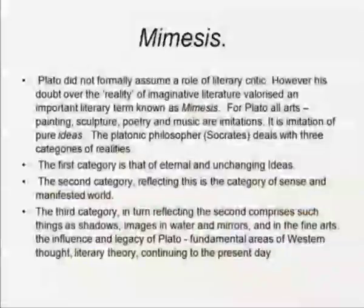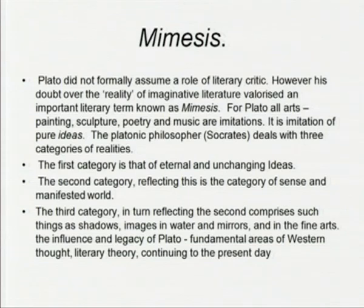The mimetic orientation is the basis of all classical criticism — the exploration of art as essentially an imitation. Mimesis is imitation, and the imitation of aspects of the universe was probably the most primitive aesthetic theory. Abrahams, in The Mirror and the Lamp, traced the evolution of mimetic theory through two significant metaphors: the mirror, comparing the mind to a reflector of external objects, and the lamp, comparing the mind to a radiant projector that makes a contribution to the object it perceives. For Plato, all arts — painting, sculpture, poetry, music — are imitation or mimesis: imitation of pure ideas.